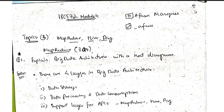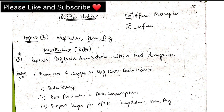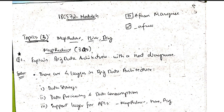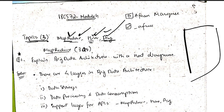Hello everyone, today we'll be learning Module 4 of Big Data. In this module we have three topics: MapReduce, Hive, and Pig. This is a very long module but there are not many questions asked — only a few topics are most repeated, which are written in the notes.